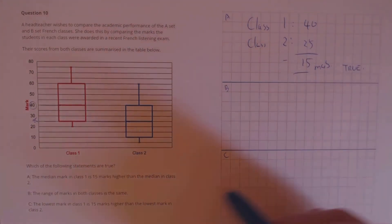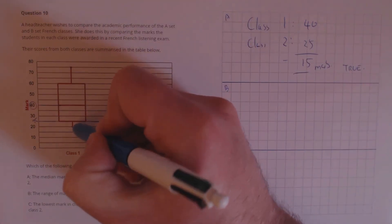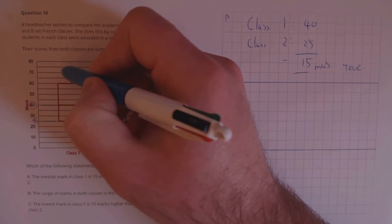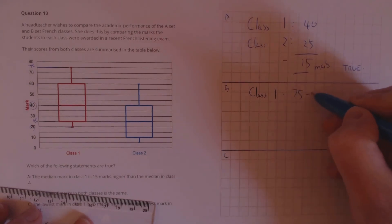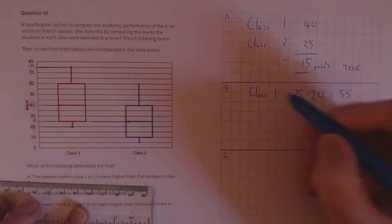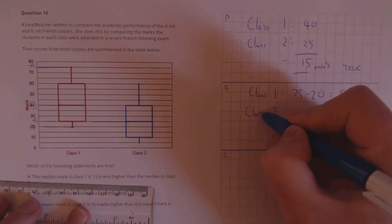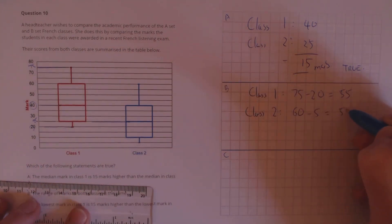B: the range of marks in both classes is the same. To calculate the range, we take the top value minus the smallest value. For class 1: 75 minus 20 equals 55. And for class 2: 60 minus 5 equals 55. So they are both the same — that's true.